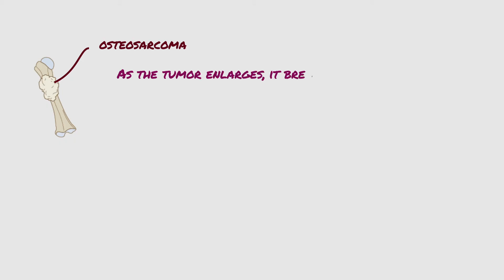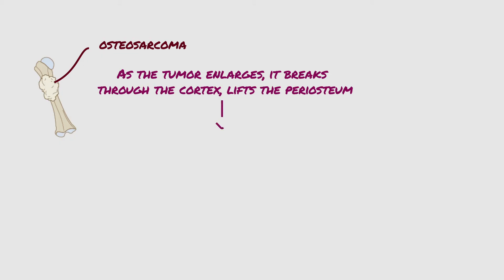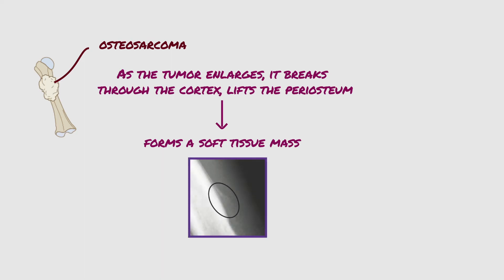As the tumor enlarges, it breaks through the cortex and lifts the periosteum, which is a dense layer of vascular connective tissue enveloping the bones, forming a soft tissue mass. The triangular shadow between the cortex and the raised ends of the periosteum is known radiographically as Codman's triangle.